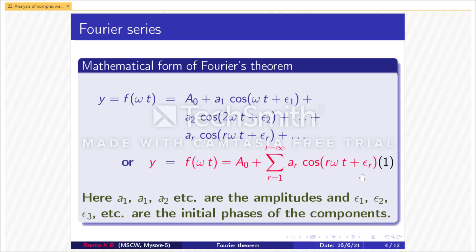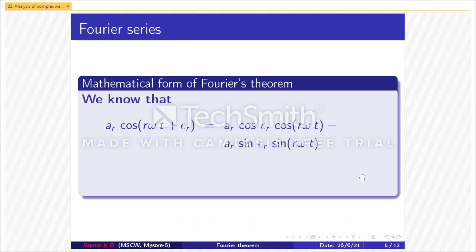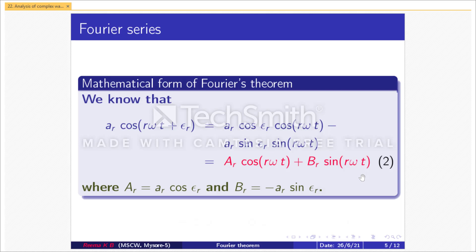Here a₁, a₂, a₃, etc. are the amplitudes, and ε₁, ε₂, ε₃, etc. are the initial phases of the components. We know that aᵣcos(rωt + εᵣ) = aᵣcos(εᵣ)cos(rωt) − aᵣsin(εᵣ)sin(rωt), which equals aᵣcos(rωt) + bᵣsin(rωt). Let us consider this as equation 2, where aᵣ = aᵣcos(εᵣ) and bᵣ = −aᵣsin(εᵣ).